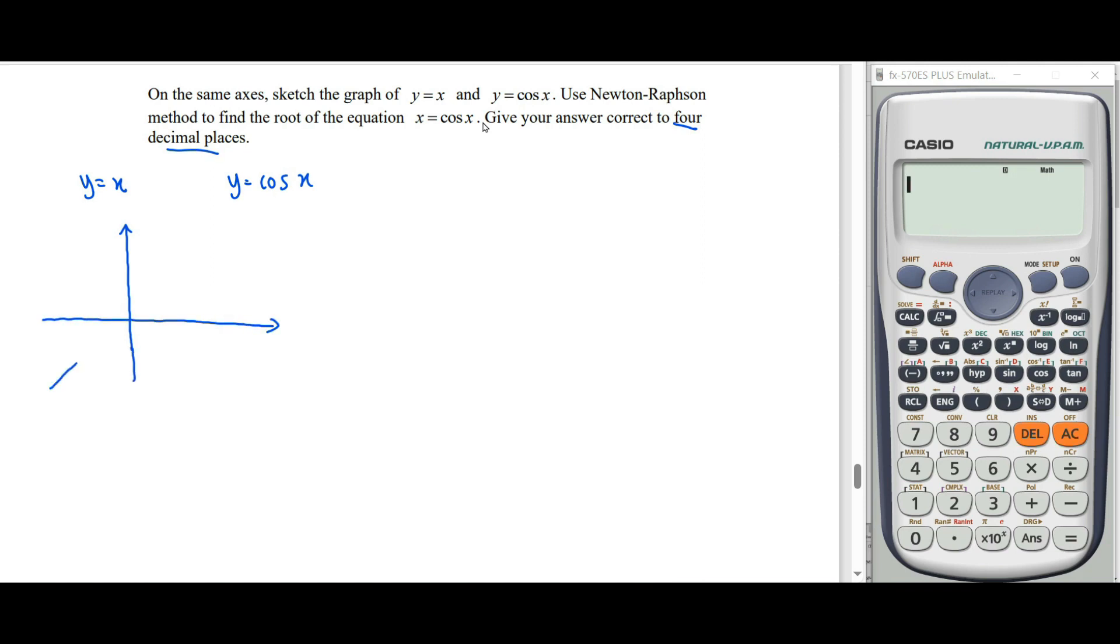It passes through the origin, so this is y equals x. Label our x axis and y axis. For the second graph where y equals cos x, cos x starts with 1 then going to negative 1, then continues going up and so on.